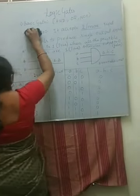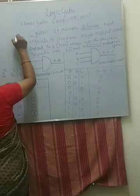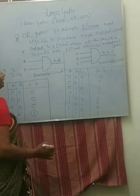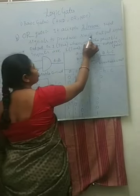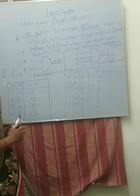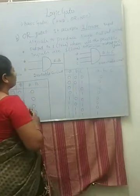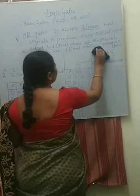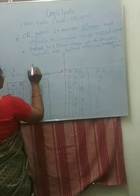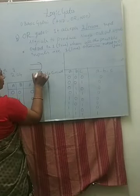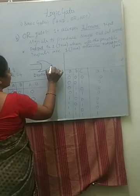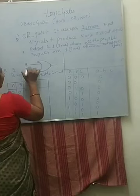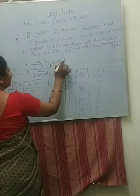Now let's move to the OR gate. The OR gate performs logical addition. It is a basic gate that accepts two or more input signals to produce a single output. The circuit diagram for the OR gate has a small curve shape. Inputs A, B produce output A+B. The symbol for OR gate is plus.